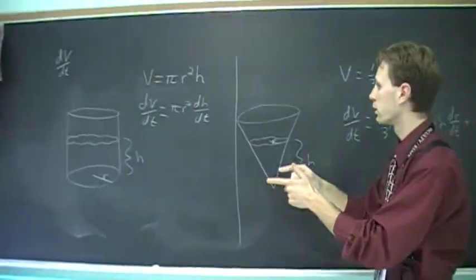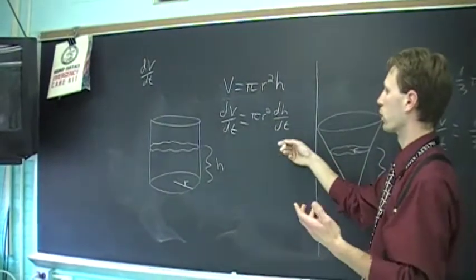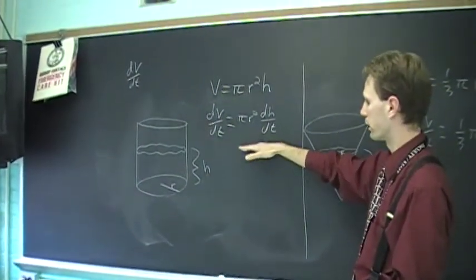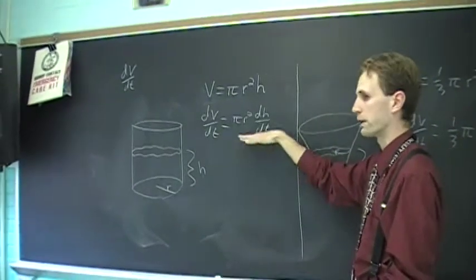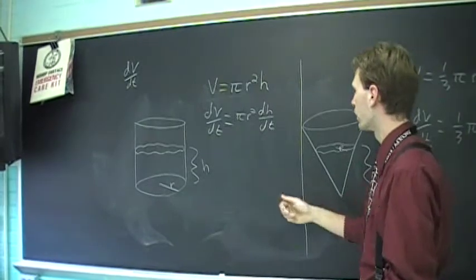Unlike over here, where r was fixed, there were no other variables. The rate of change of the depth is independent of how deep it is, or how much is in there, and that's why there are no v's or h's popped up in here.